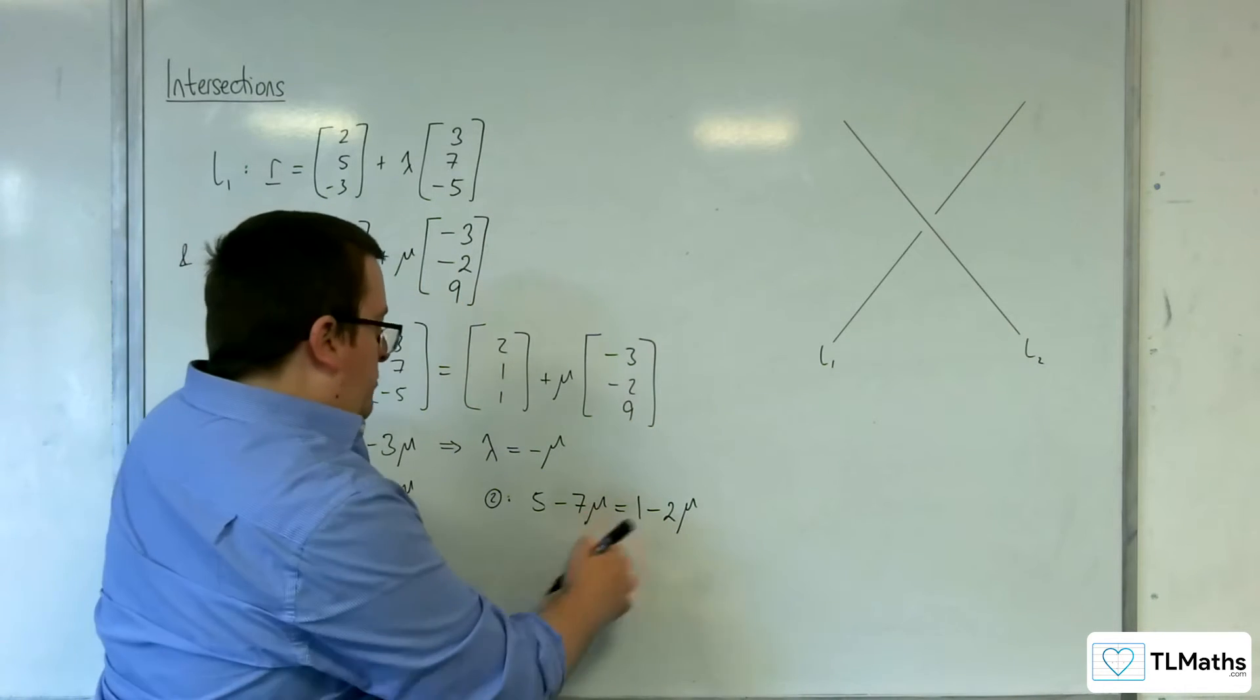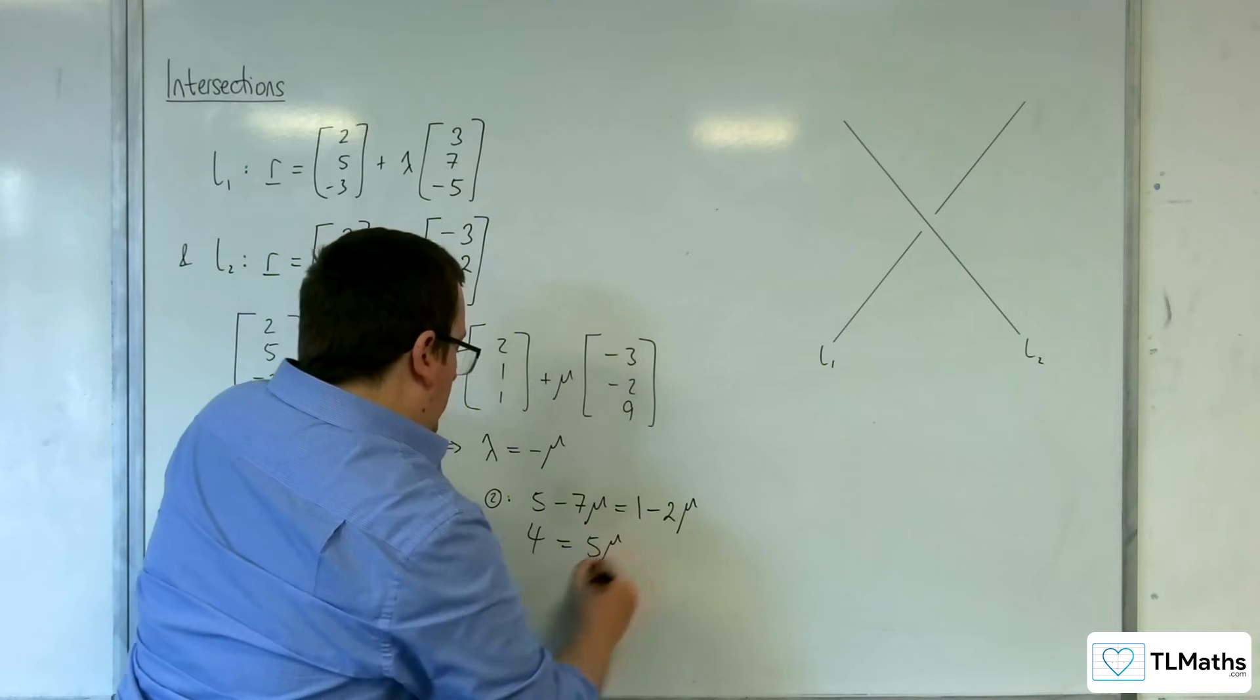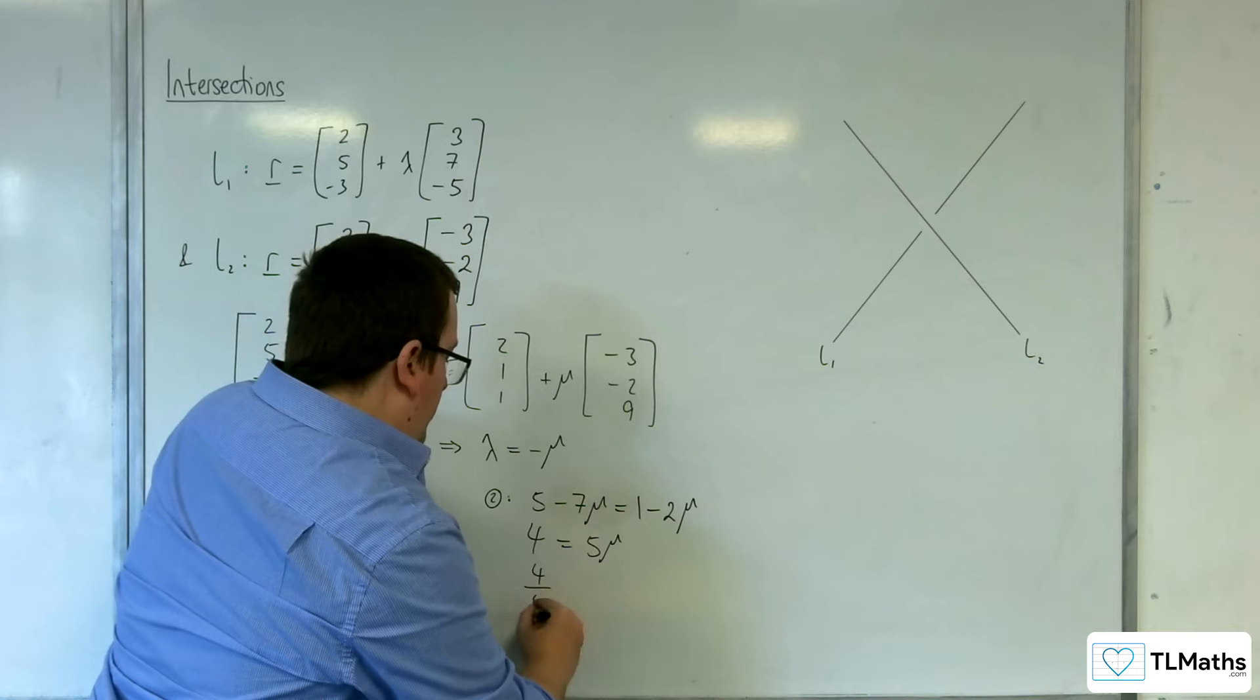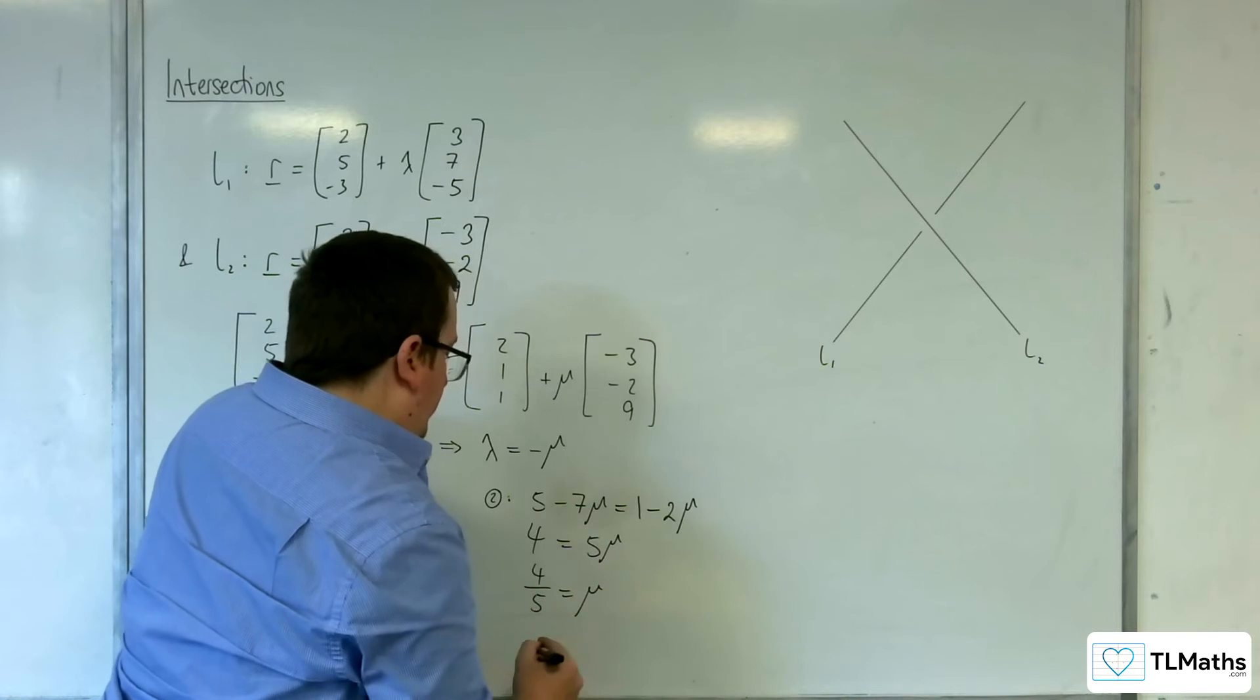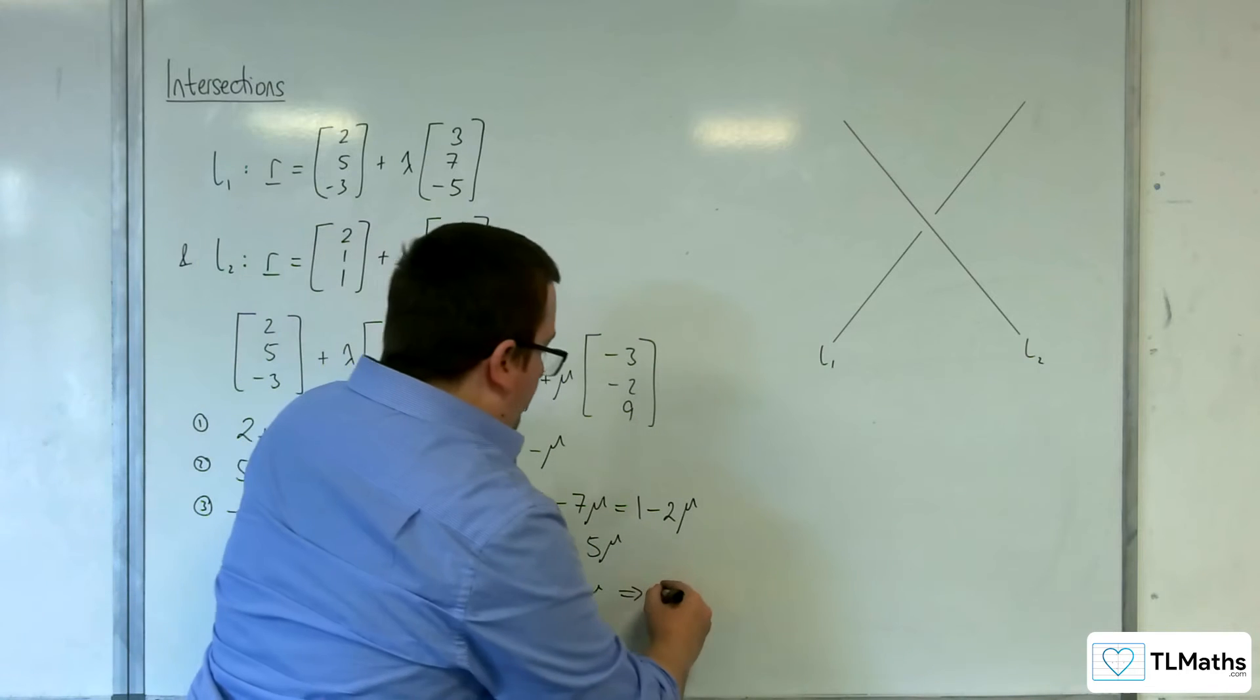So subtract 1 from both sides, add 7 mu to both sides, and so mu would have to be 4 fifths. And that implies that lambda would have to be minus 4 fifths.